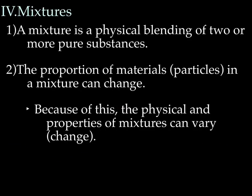Mixtures. Before we talk about mixtures, remember: a mixture might sound kind of like a compound, but a compound is two or more atoms that are chemically hooked together. A mixture, on the other hand, is a physical blending of two or more pure substances. For example, if I were to take salt and sand, I could dump them together, shake it up, and now I have a bucket of salt and sand — but it's still salt and sand. You haven't made anything new. When you have chemical bonding, you're actually making something new; with a mixture, you're not. The proportion of materials or particles in a mixture can change — this is not true of a compound. Because of this, the physical and chemical properties of mixtures can vary or change, which is again not true of a compound.